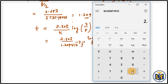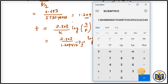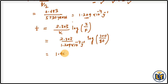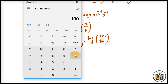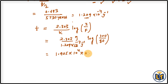At the top we have 2.303 divided by 1.209, which gives 1.905. Because of the negative exponent it becomes positive, giving 1.905 × 10⁴. For the log term: 100 divided by 80 equals 1.25, and log(1.25) = 0.0969. We multiply by 0.0969, and the per-year units resolve so the result will be in years.